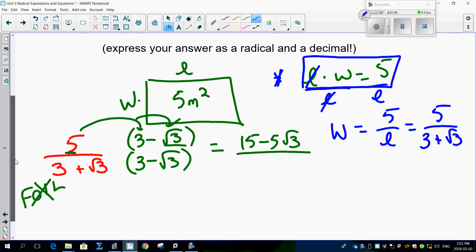Let's do the bottom. 3 times 3, which of course is 9, root 3 times root 3, so that's minus 3. So you've got 15 minus 5 root 3 all over 6.